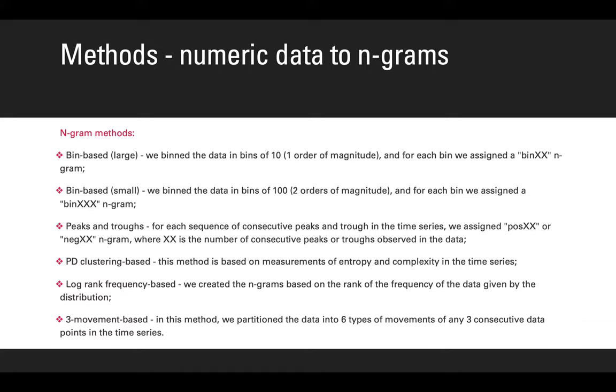We used six different methodologies to create six different corpora from this Kepler dataset. Basically, each corpus is a collection of 632 individual books, and each book is a sequence of the n-grams that we created based on these following methods.